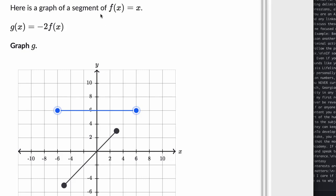We're told here is a graph of a segment of f(x) = x. And so they've graphed that segment right over here. And then they tell us that g(x) = -2f(x), and they want us to graph g.